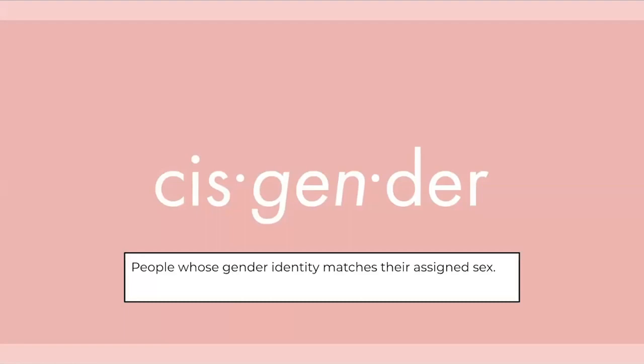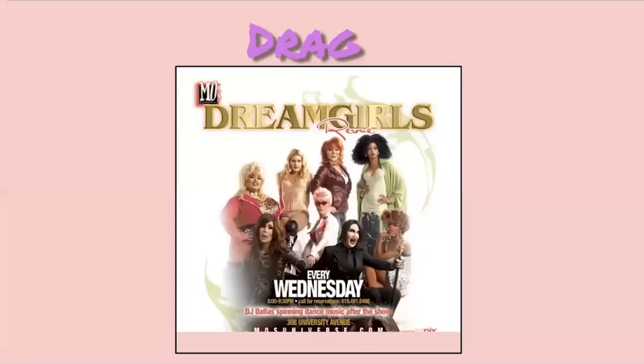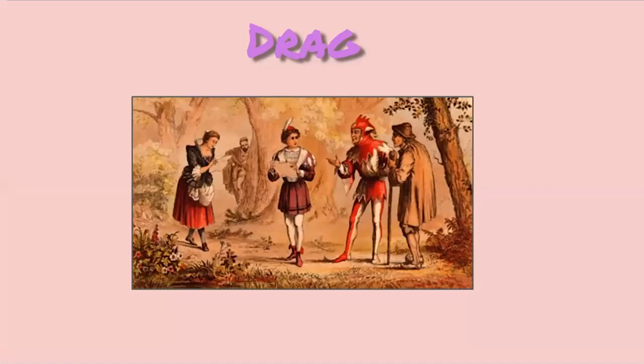Being cisgender — 'trans' means on the other side of or to change, while 'cis' means the same — refers to people whose gender identity matches their assigned sex, which is the majority of the population. It's a newer word that not everyone understands, but in reality it simply describes people whose identity matches their assigned sex. Doing drag is the performance of gender roles, usually for entertainment purposes. It comes from Shakespeare's abbreviation for 'dress resembling a girl,' back when only men could be actors.